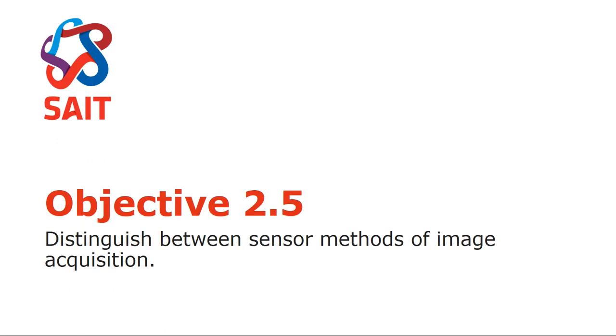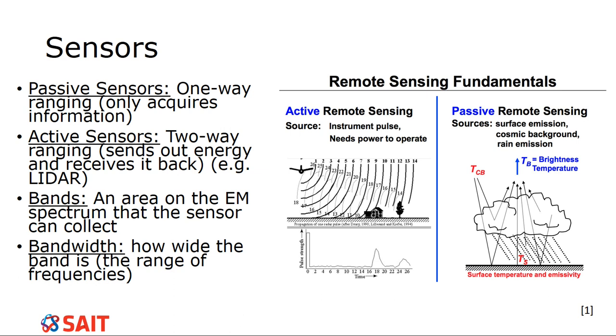So moving into Objective 2.5, there is the need to distinguish between sensor methods. So there's really two ways that sensors acquire their data. One of the ways is a passive sensor, and this is known as a one-way ranging sensor. So in remote sensing, all it does is acquire information. So it just takes it in. It's not going to send you anything. Well, it does have a communication device so that the data can make it to Earth, but that's not the actual sensor. That's a computer component.